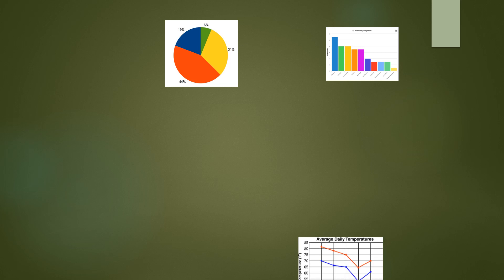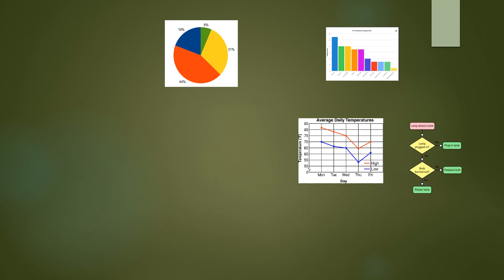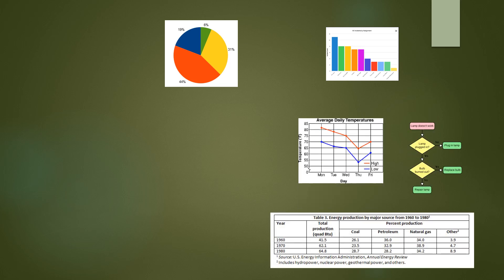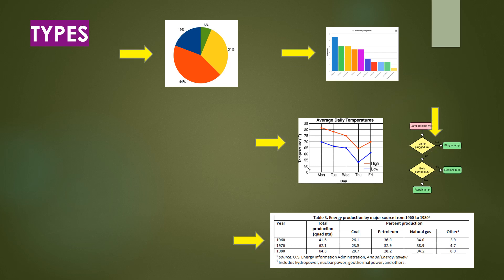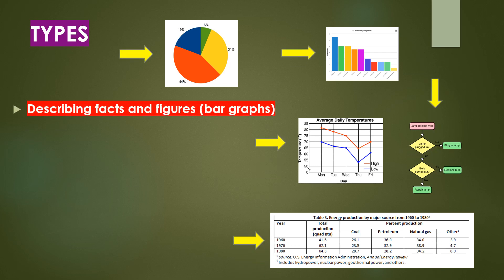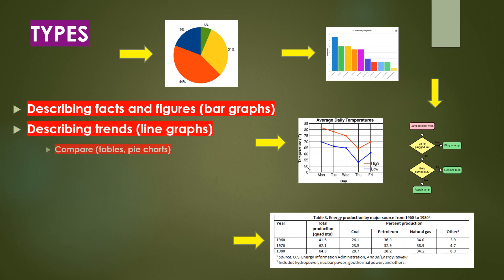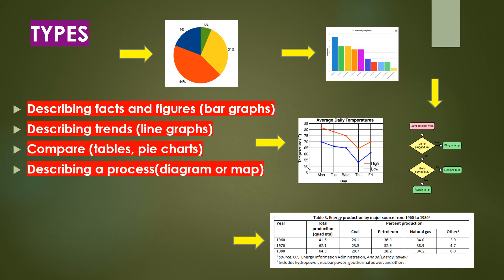Now let's take a look at the types of graphs. We can get anything like a bar graph, pie chart, table, line graph, or flow chart. If you want to describe facts and figures, take help of bar graphs. Describe trends through line graphs, comparisons through tables and pie charts, describe a process diagram or a map, and describe a flow chart.